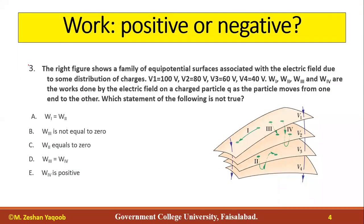Now we have a question with four equipotential surfaces associated with the electric field due to some charge distribution. V1 equals 100V, V2 equals 80V, V3 equals 60V, and V4 equals 40V. So we have four surfaces each with a constant potential value: 100V, 80V, 60V, and 40V.